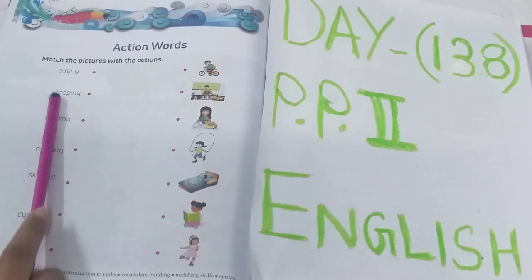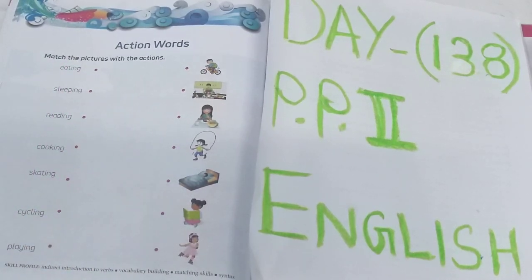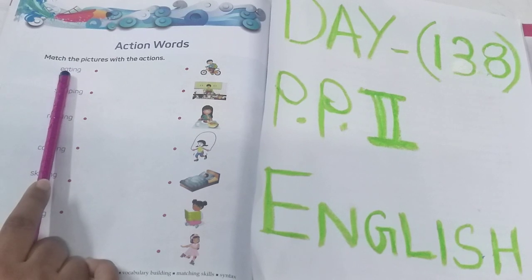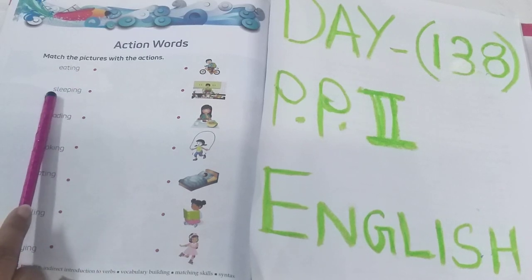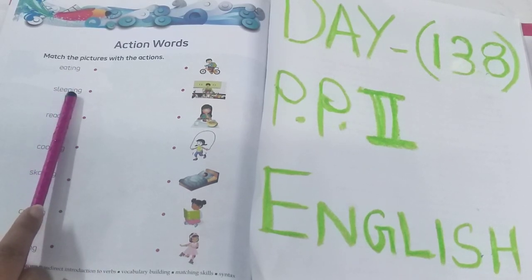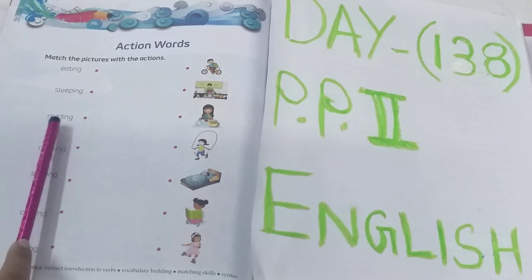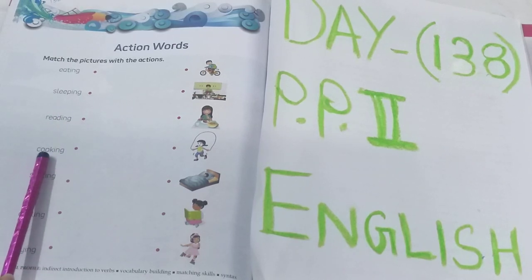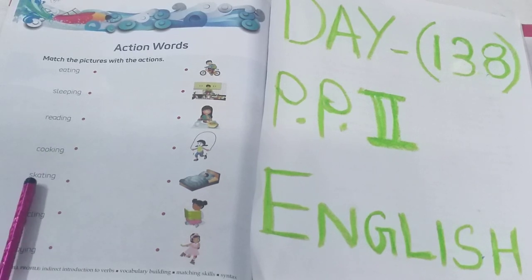You have to read these words and match with the correct pictures. See the first one: E-A-T-I-N-G, eating. S-L-E-E-P-I-N-G, sleeping. See the next: R-E-A-D-I-N-G, reading. C-O-O-K-I-N-G, cooking. S-K-A-T-I-N-G, skating.